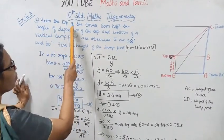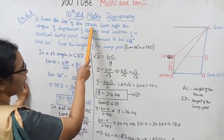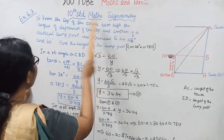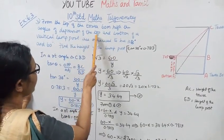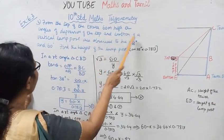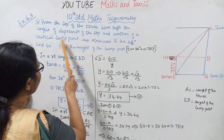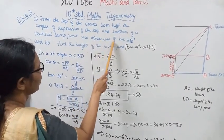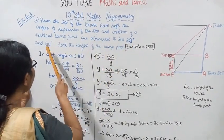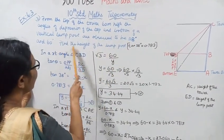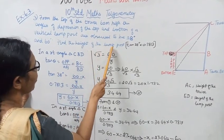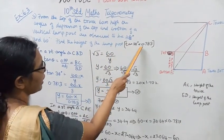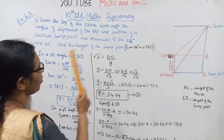From the top of a tower 60 meters high, the angles of depression of the top and bottom of a vertical lamp post are observed to be 38 degrees and 60 degrees. Find the height of the lamp post. Tan 38 degrees equals 0.7813.